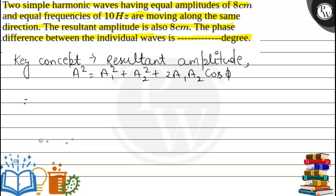A is the resultant amplitude given as 8 cm. A1 and A2 are the individual amplitudes, both also equal to 8 cm. So A1 = 8 cm and A2 = 8 cm.